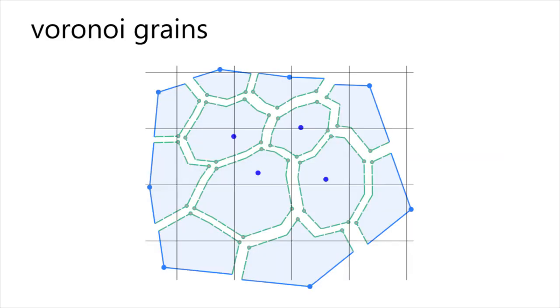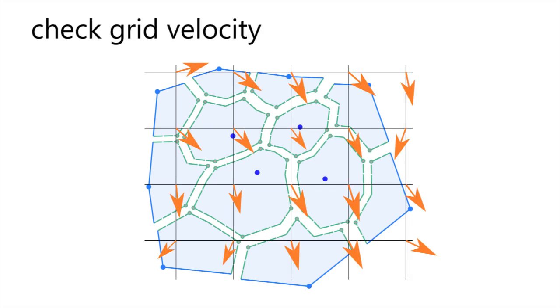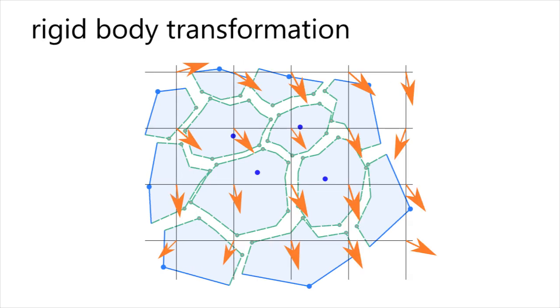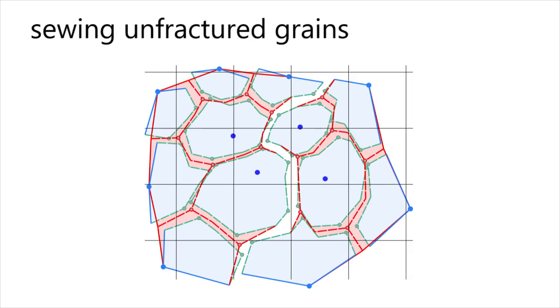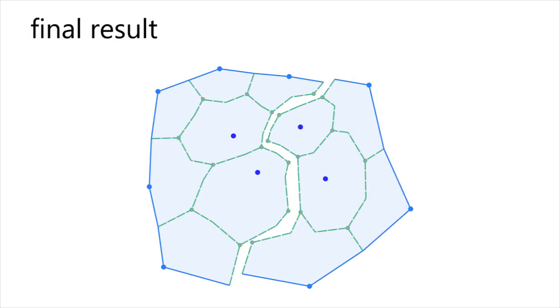MPM grid velocity helps us obtain the local orientation near each Voronoi cell center. We then extrapolate the grains using local rigid body transformation and sew them together to generate the deformed configuration of the split mesh.